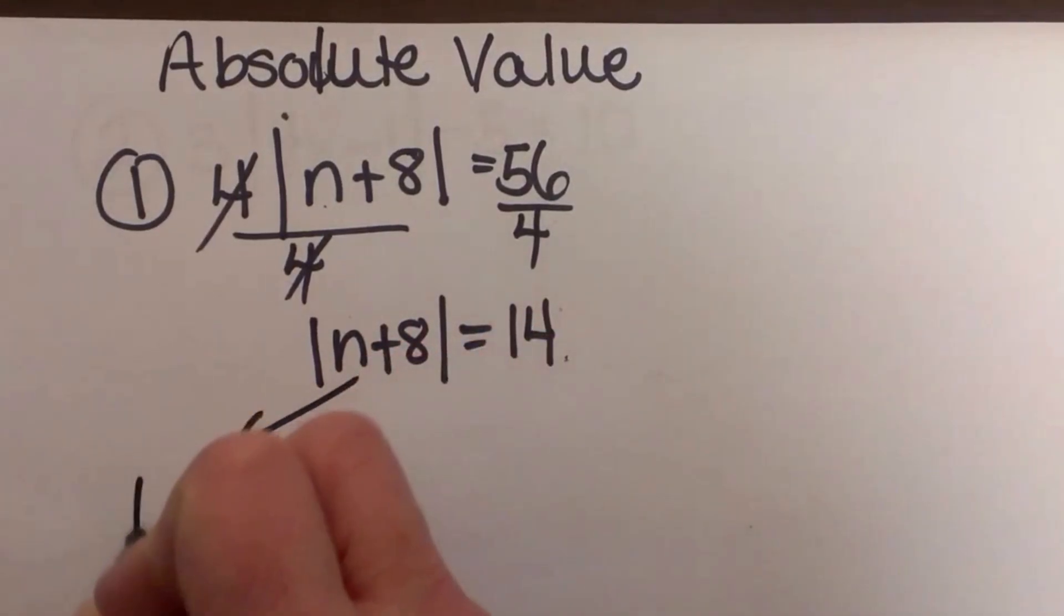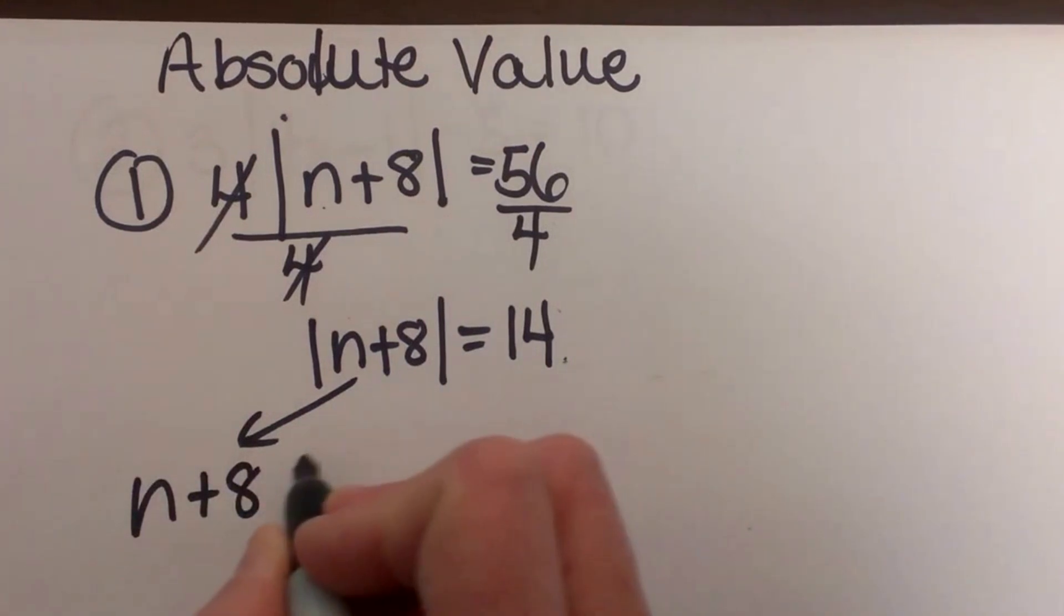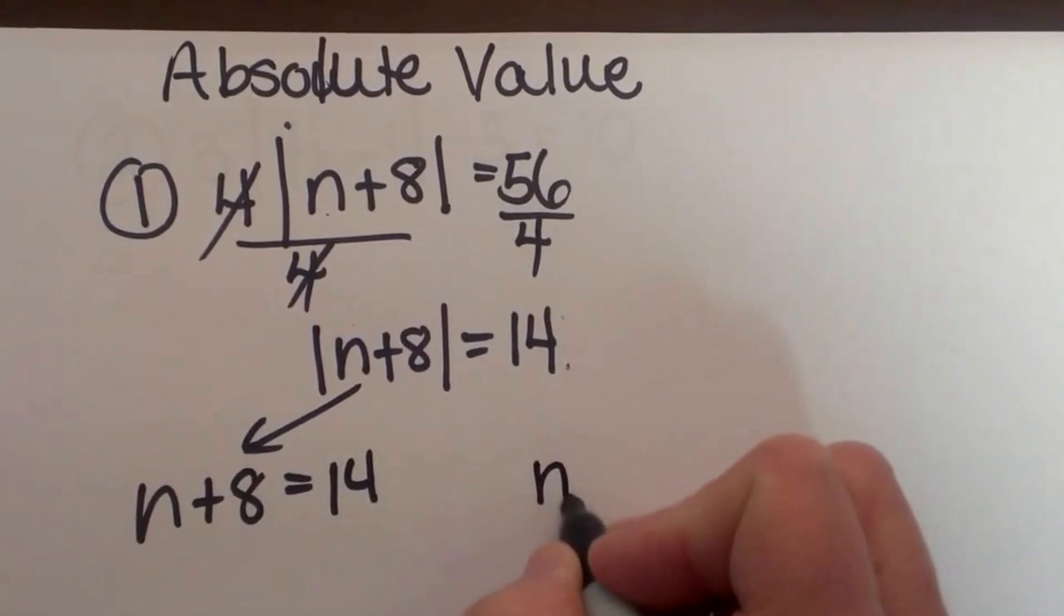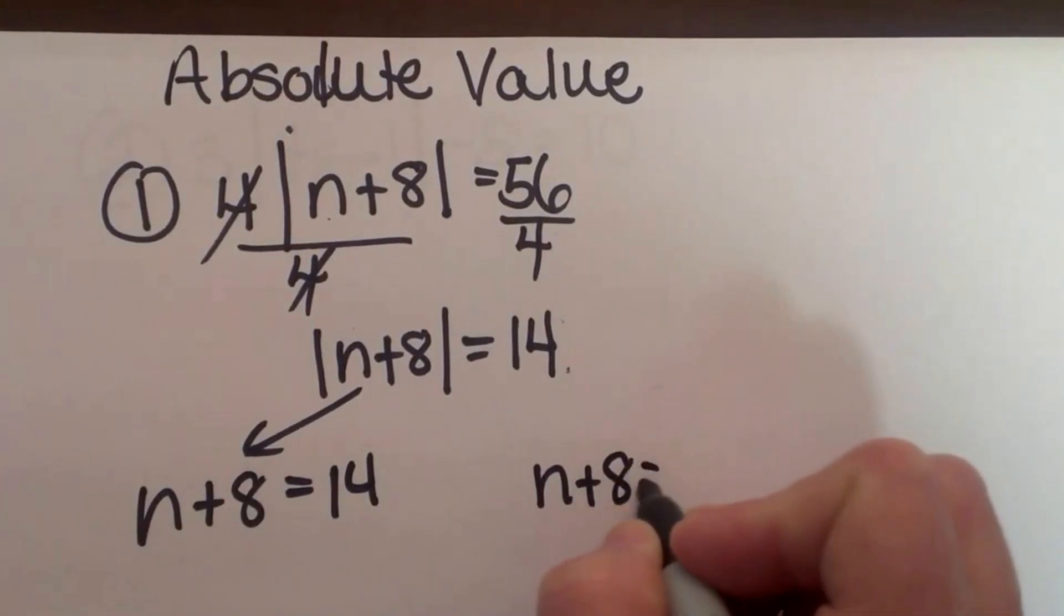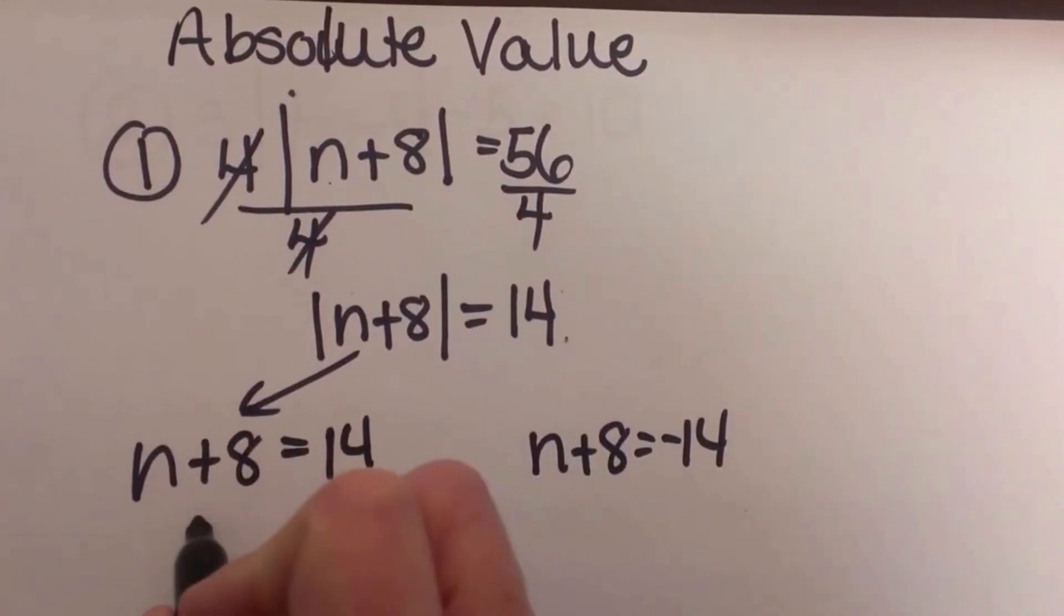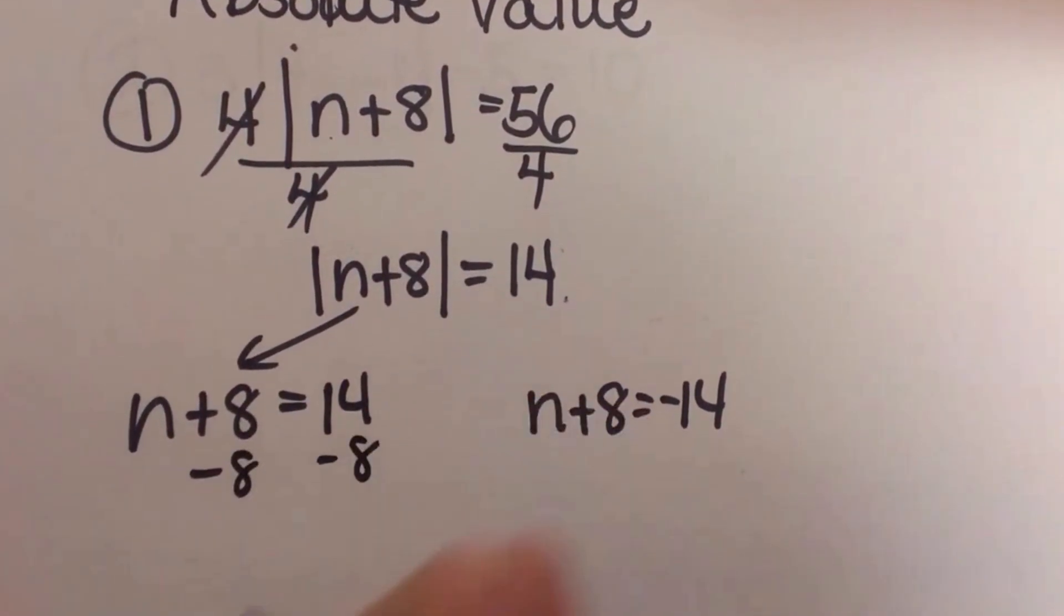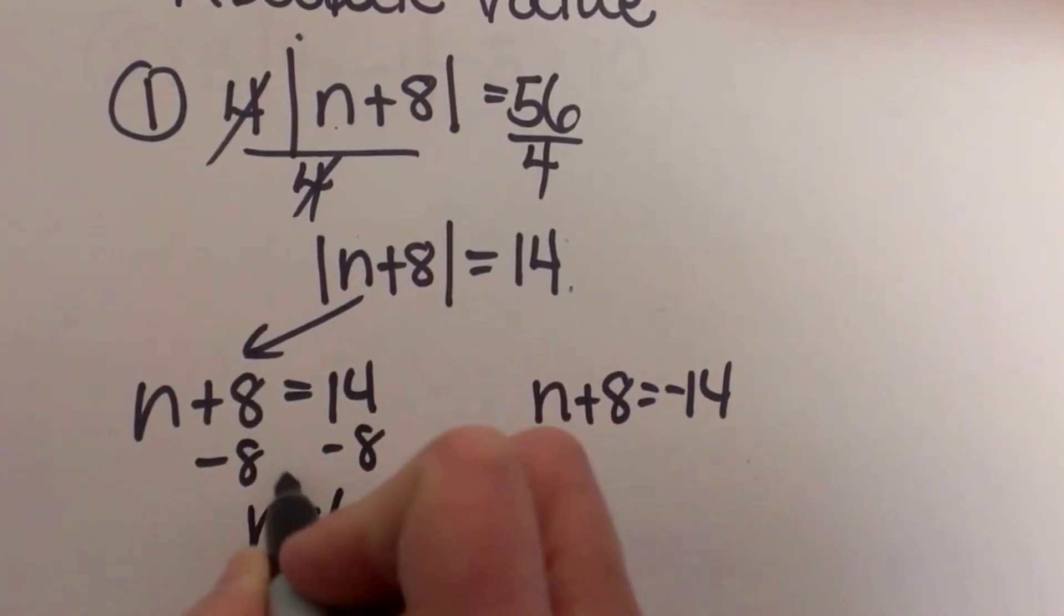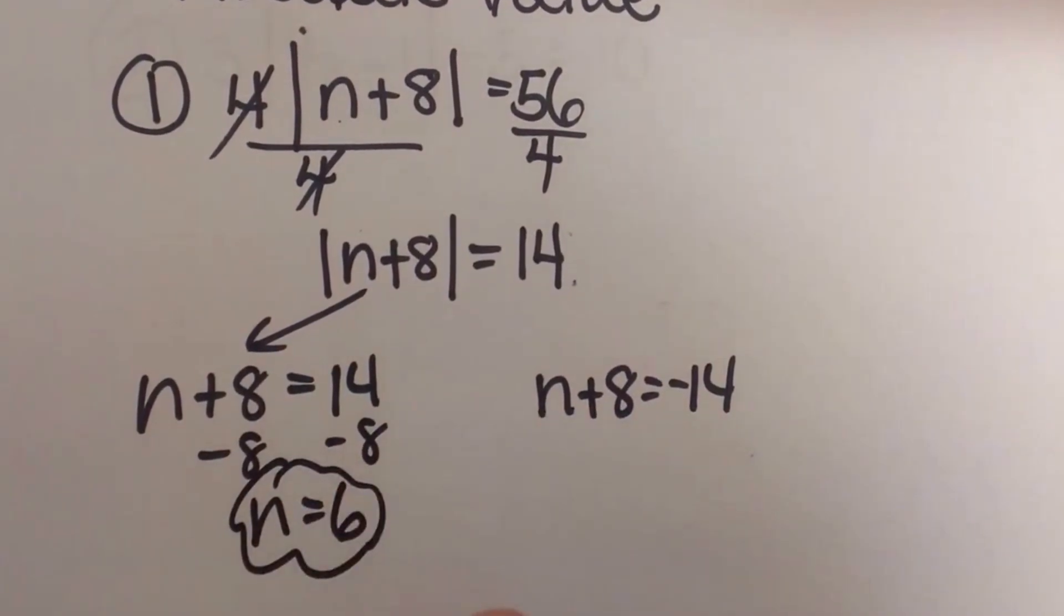So the first way, let's look at where n plus 8 is equal to positive 14, and then we are going to look at where n plus 8 is equal to negative 14. From here we just solve two basic equations. So the first one, I subtract 8 from both sides and I get n is equal to 6. So that is one of my solutions.